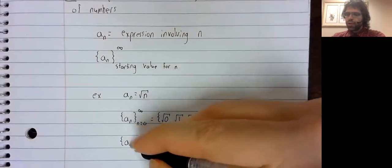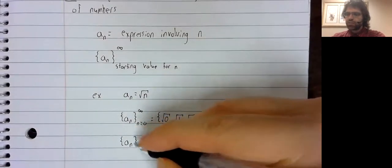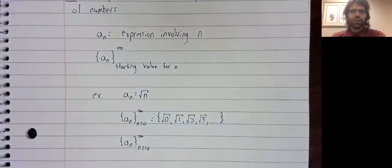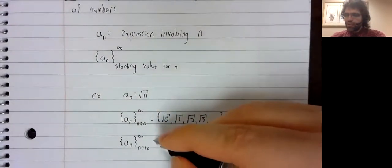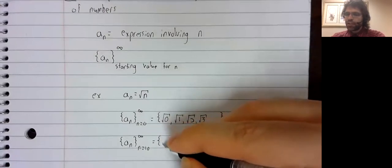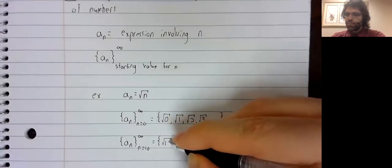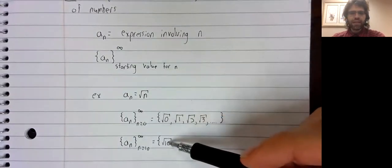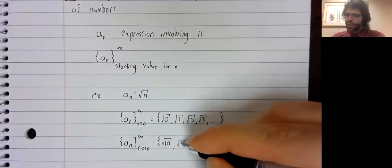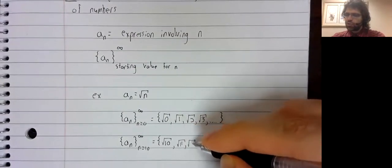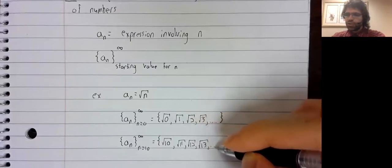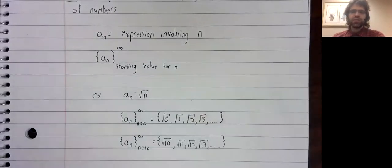Or if we wanted to start somewhere else, we could go from 10 to infinity, just picking a number at random. Now we start at n equals 10 and we count up to create this infinite list.